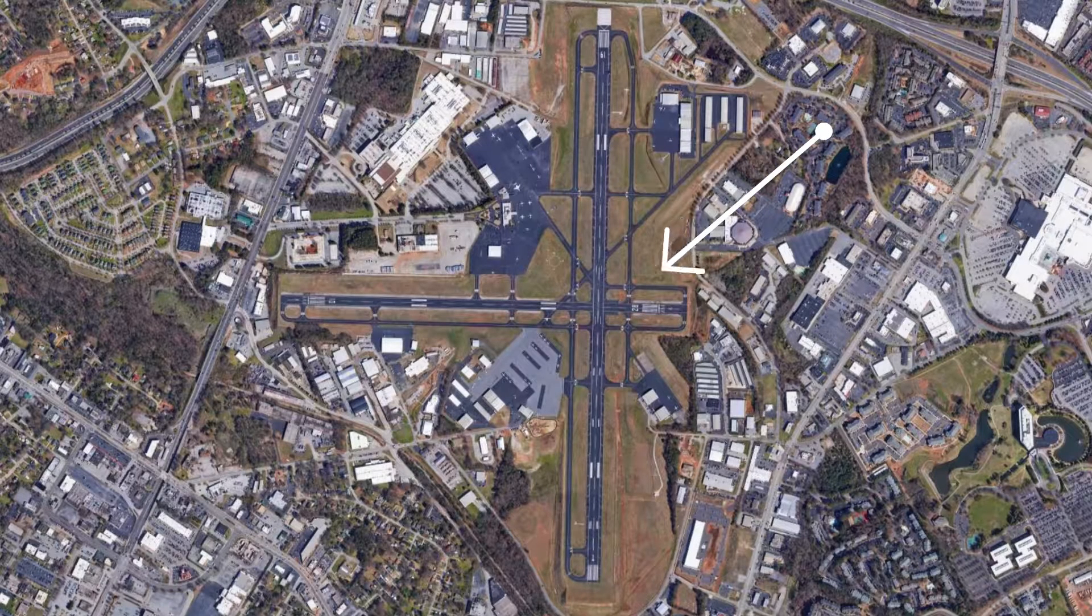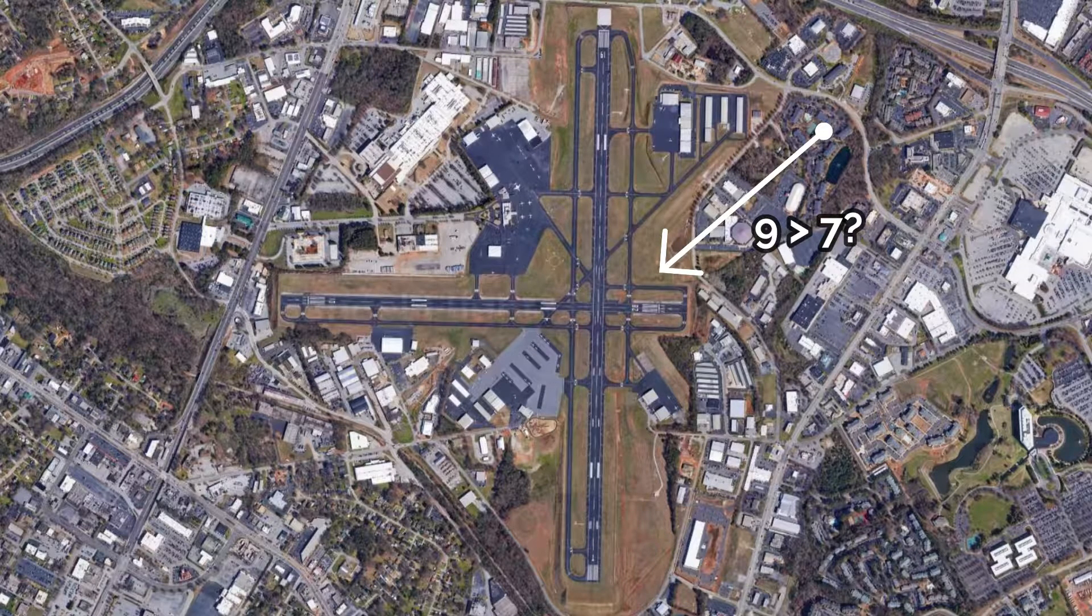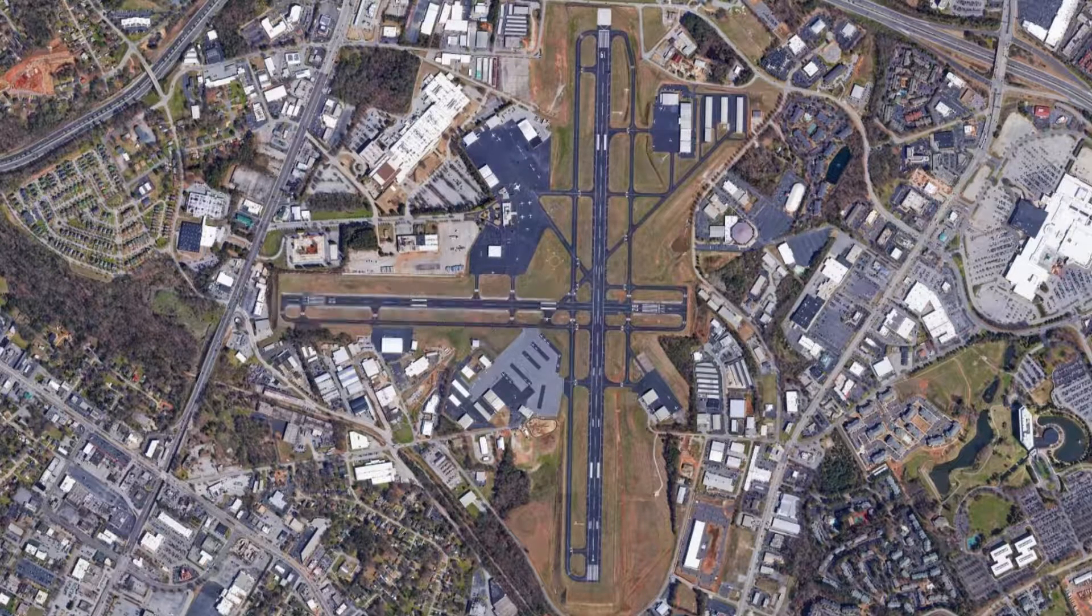On the day of the flight, wind is forecasted to be from a 050 degree heading at nine knots. A common misconception would occur if the student saw that nine is greater than their seven knot maximum and cancel the flight, but this may not have been necessary.